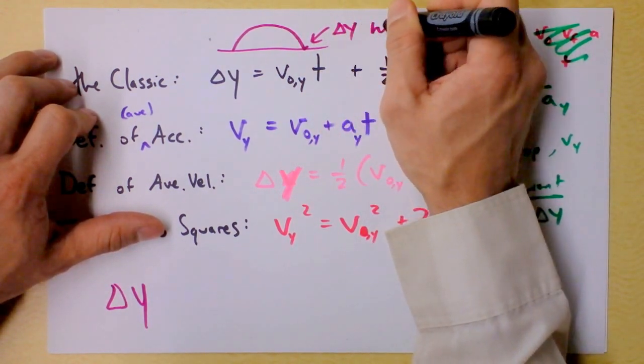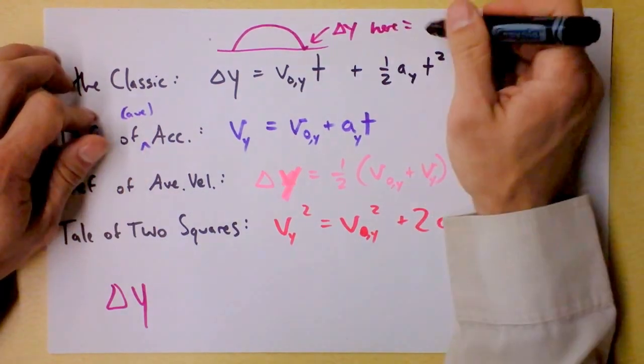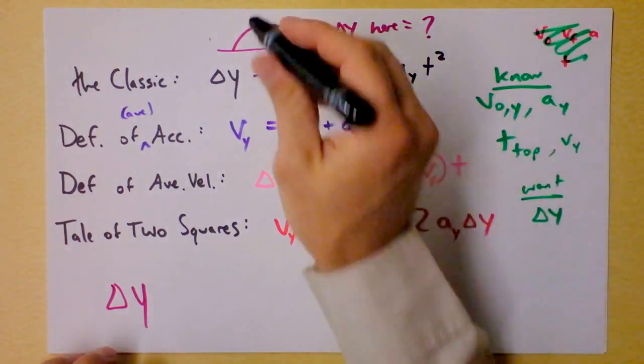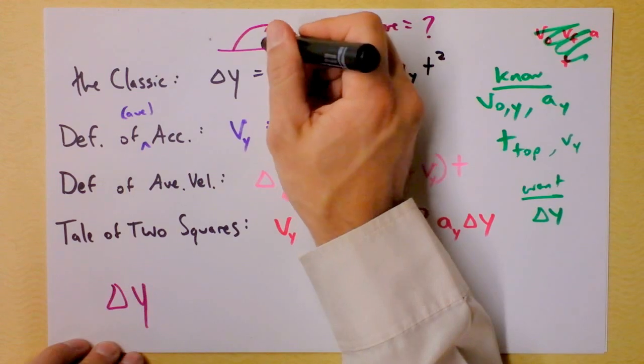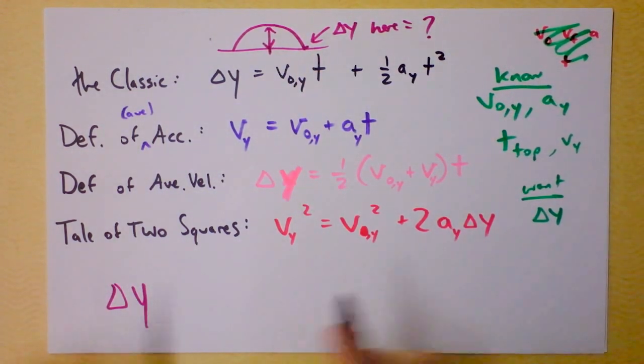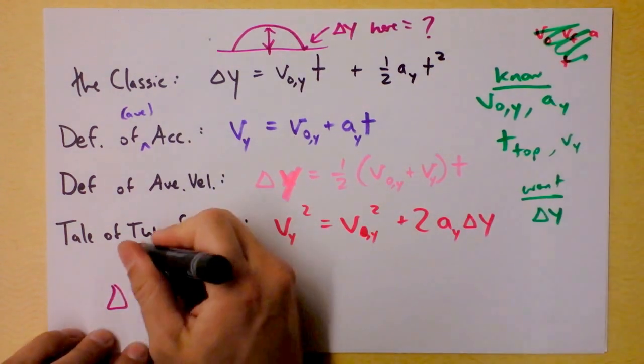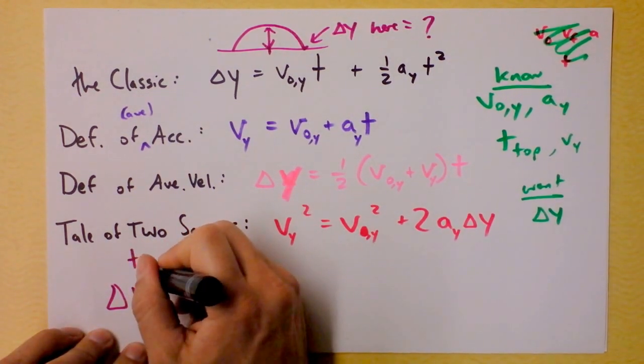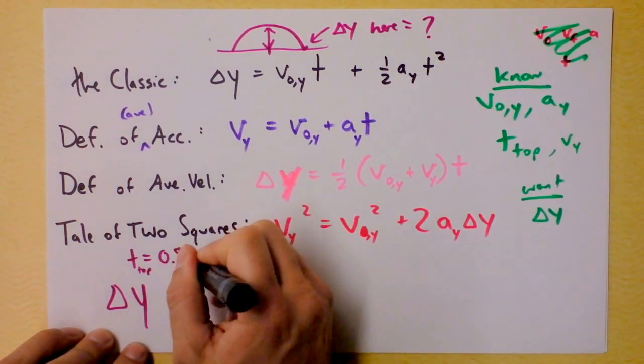Delta y here equals what? You guys can think about that for a minute. I'm trying to figure out delta y at the peak. And that's going to be halfway through the time. So I'm going to use the half time, which is t top, and it's 0.8 seconds.